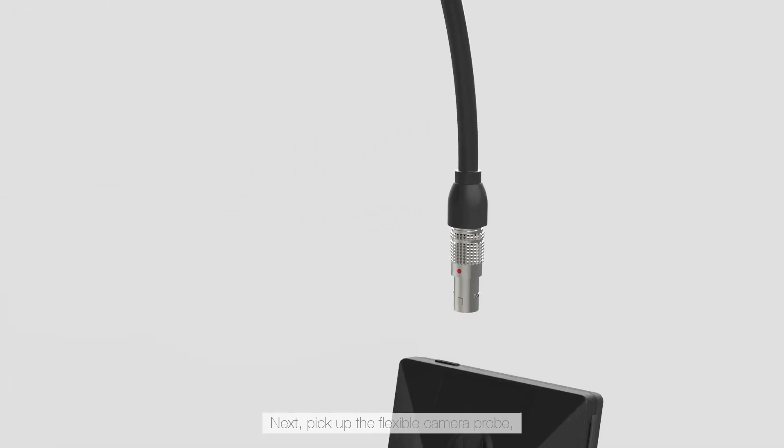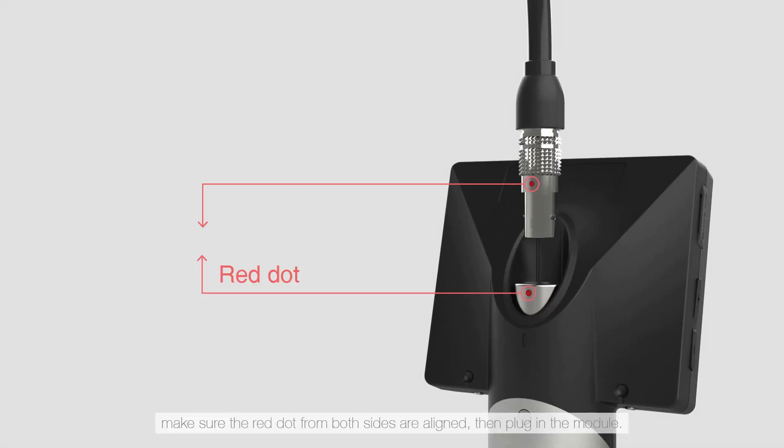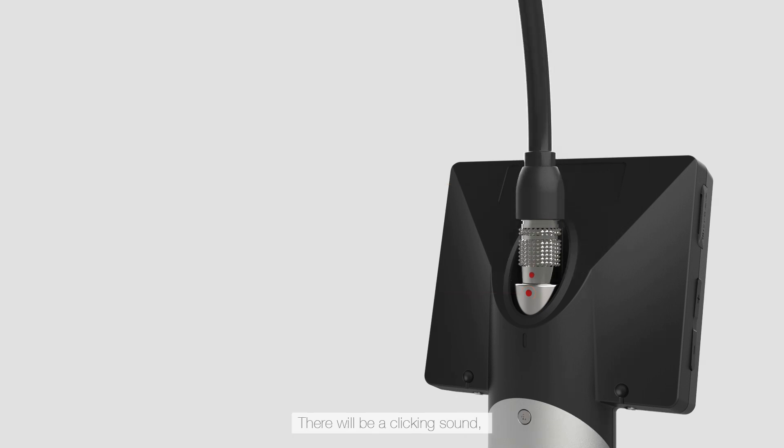Next, pick up the flexible camera probe, make sure the red dots from both sides are aligned, then plug in the module. There will be a clicking sound indicating that the module is successfully connected and is locked in place.